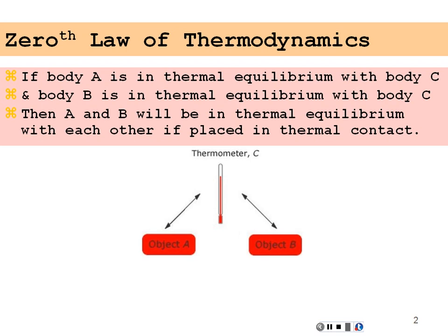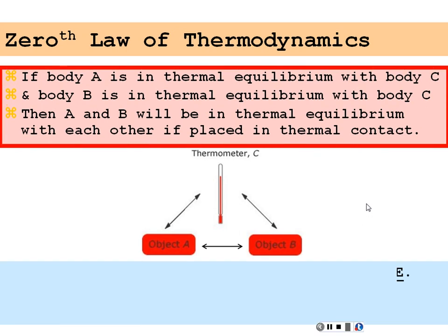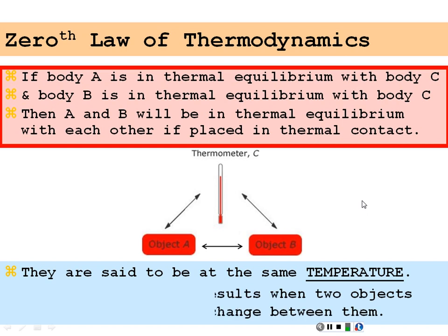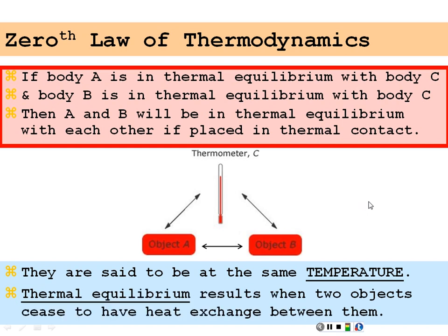which means that if they were placed in thermal contact, there would be no heat exchange from one to the other. They would have thermal equilibrium. This allows us to establish a temperature based on body C. So they are said to be at the same temperature, and thermal equilibrium will result when two objects cease to have heat exchange between them, and we can use body C as our measurement of that.